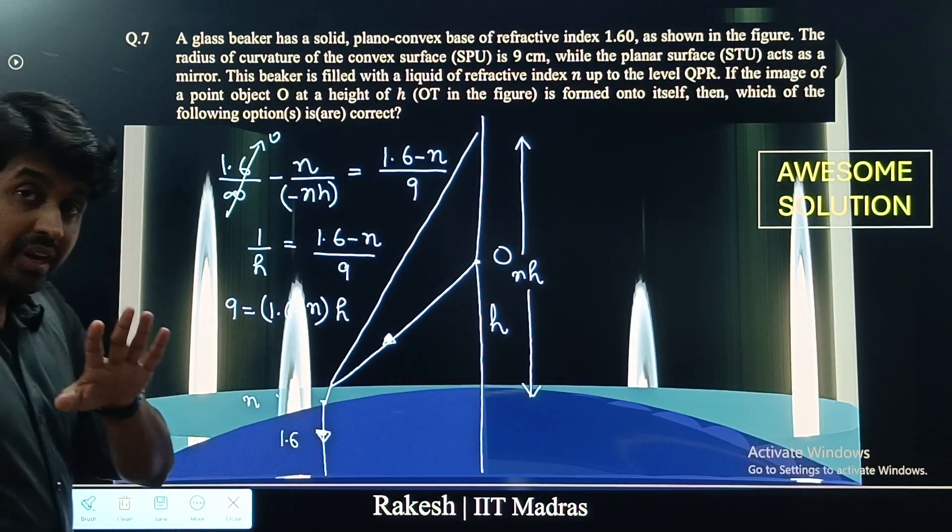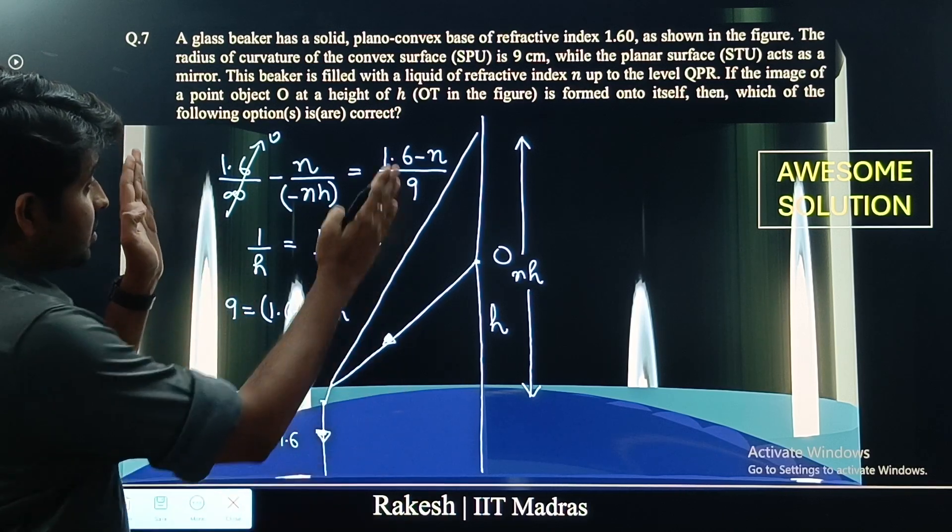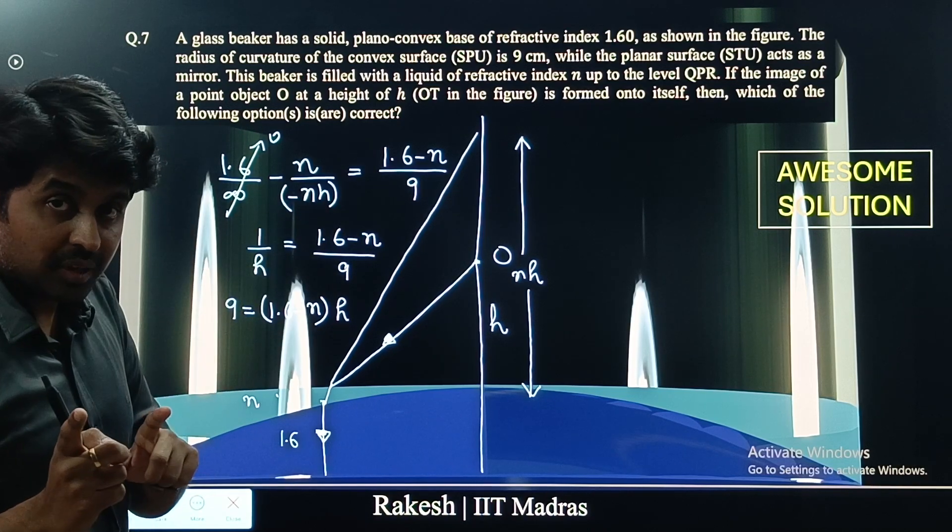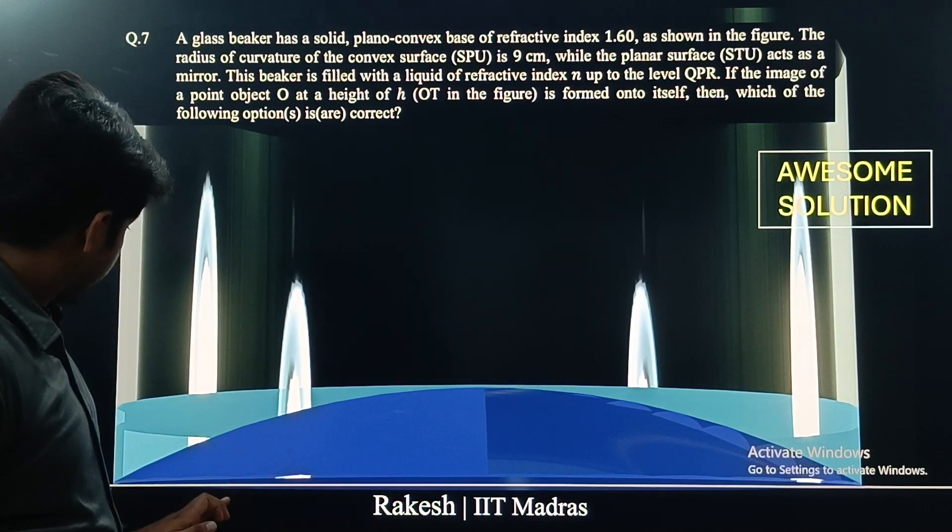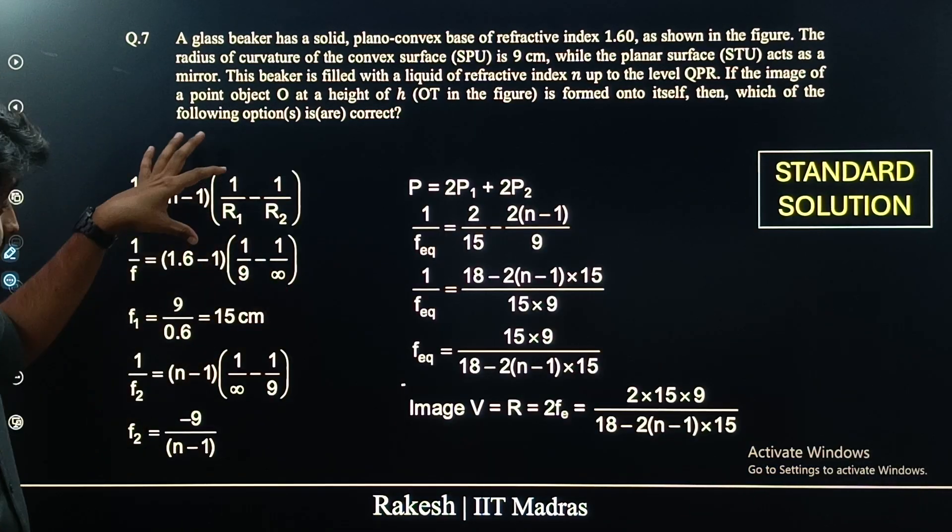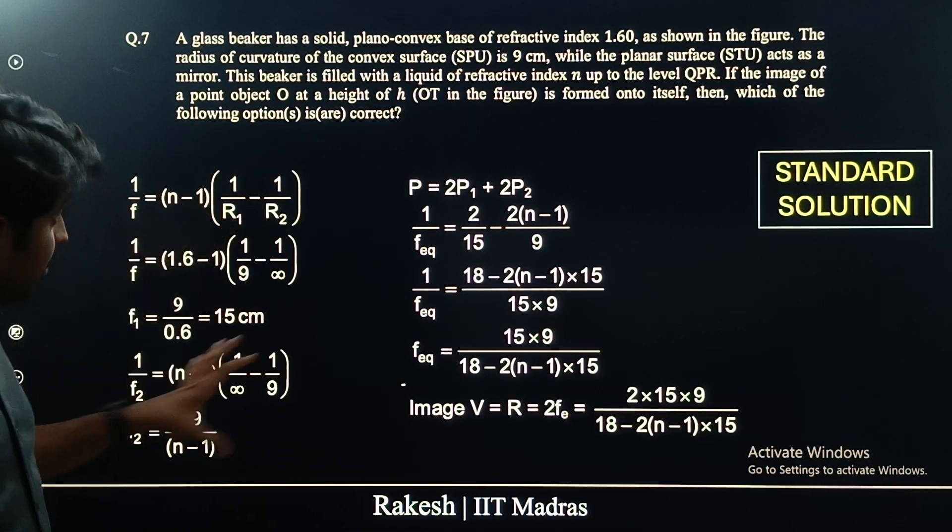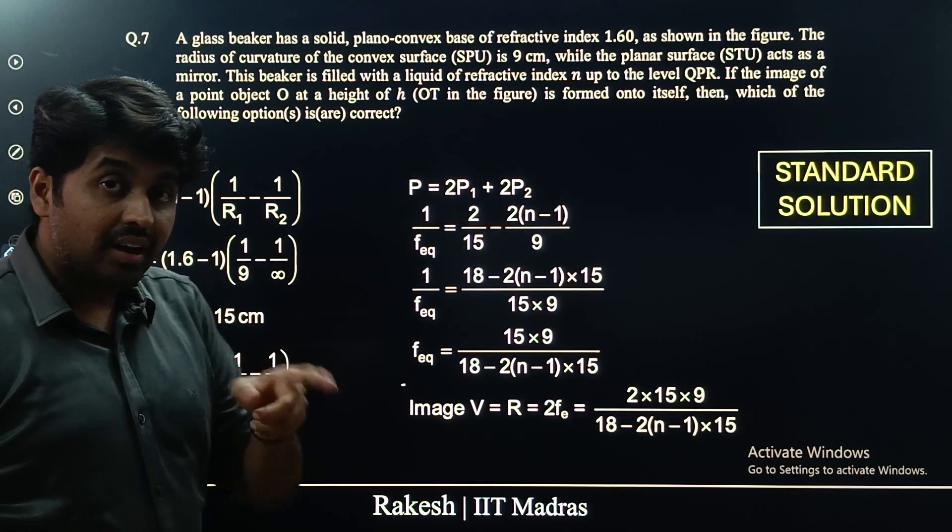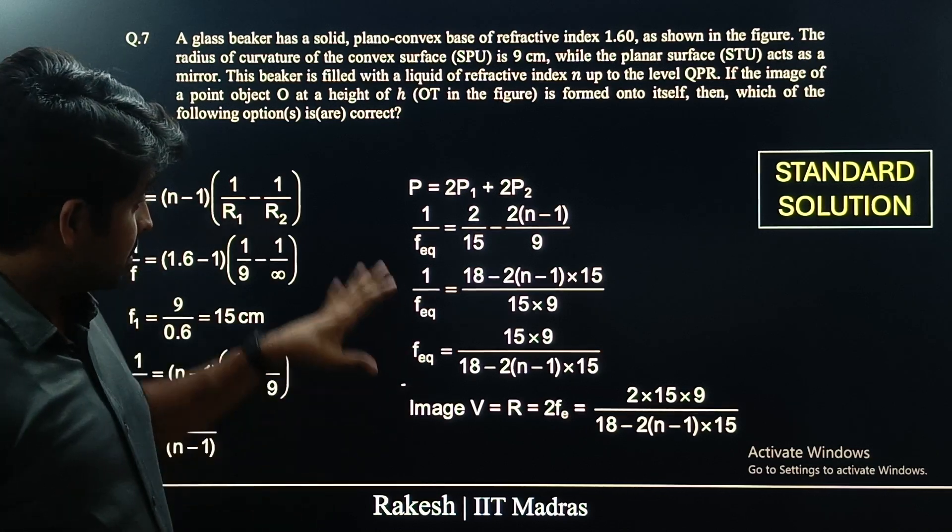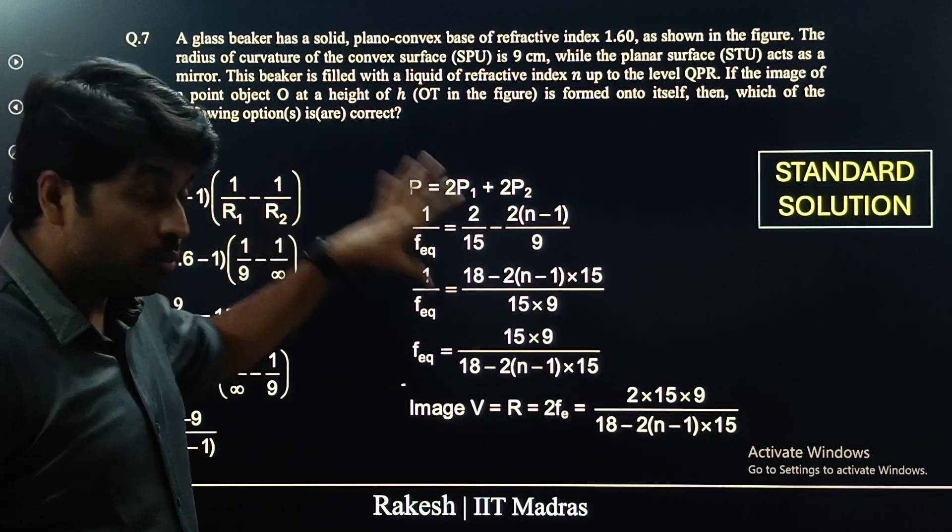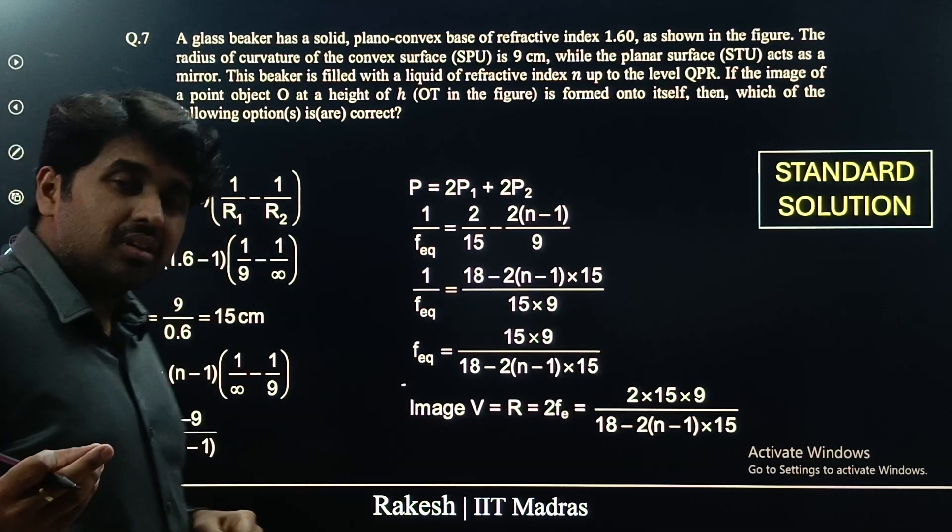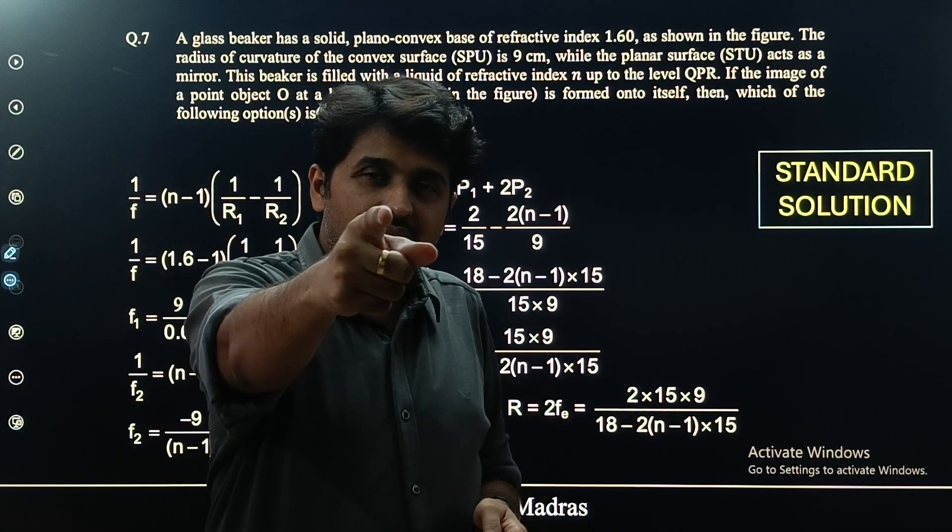Let us go back to the previous method. You see, here we have just written one formula, refraction at the curved surface. In the previous method, you have to find the power of one, power of the second, final power. And while writing the power, if you make mistakes in the sign convention, there is a high chance of making mistakes, more calculations, more silly mistakes. That is why this method that we have seen is an awesome method.